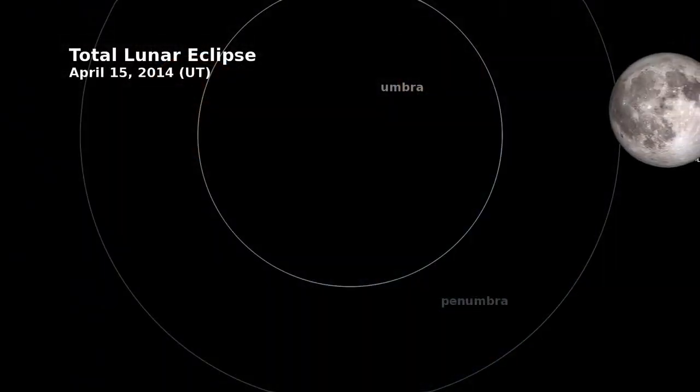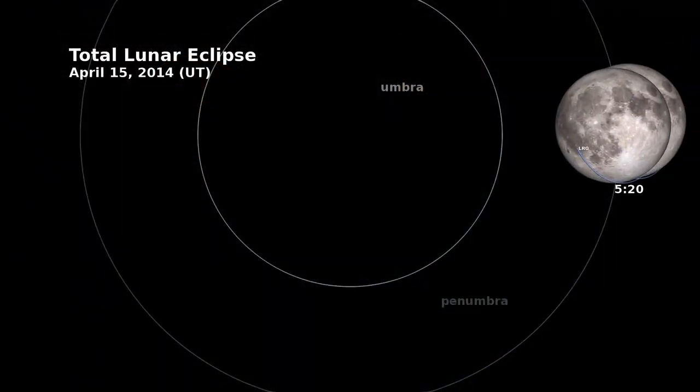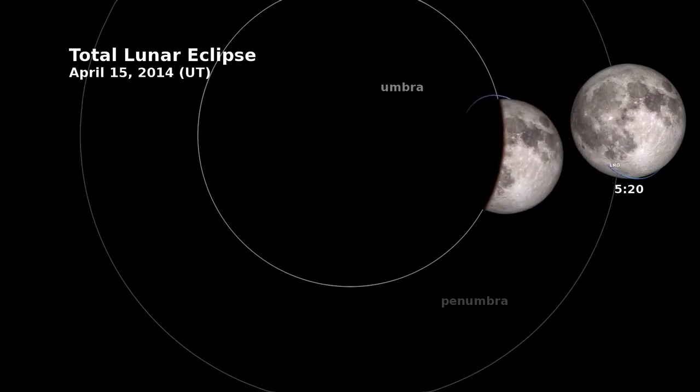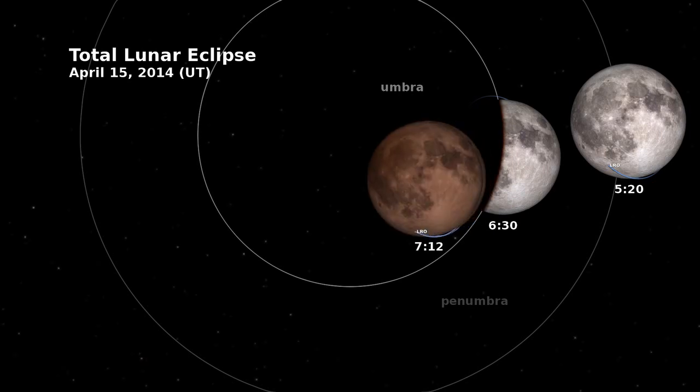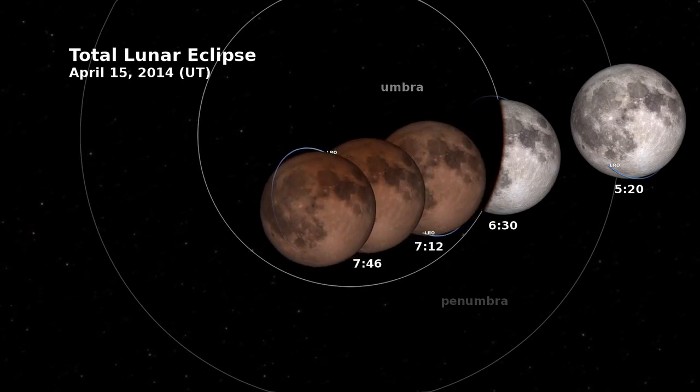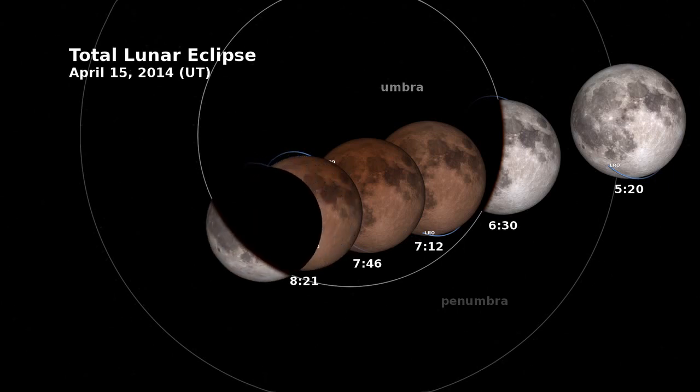What we see in this animation is a recreation of LRO orbiting the moon during the upcoming eclipse. When the moon passes into the Earth's umbra, or the Earth's shadow, that's when it is completely blocked from the sun, and we see the effect of Earth's sunsets being projected onto the lunar surface. That's why it turns a hue of red.